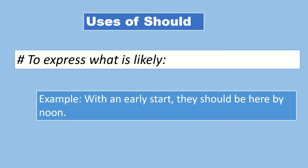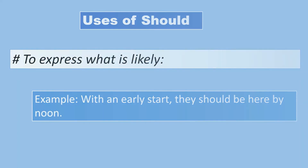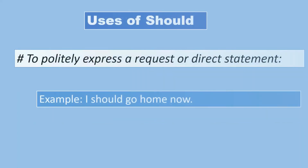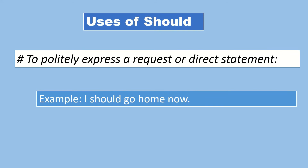'Should' is also used to politely express what is likely — something that is likely to happen. For example: 'With an early start, they should be here by noon,' meaning if they start early then they will be here by noon. 'Should' is also used to politely express a request or direct statement. For example: 'Should I go home now?'